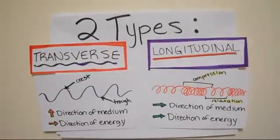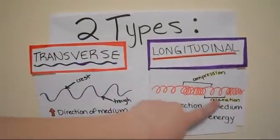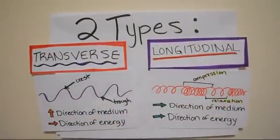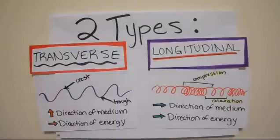Longitudinal waves act much like a slinky, with compressions and relaxations. A disturbance begins a compression and moves the medium and the energy in the same direction. An example of a longitudinal wave is a sound wave.